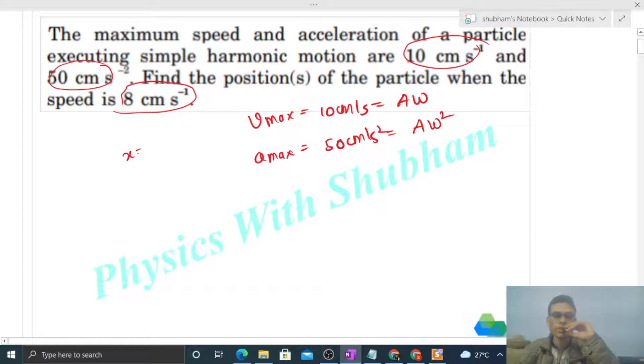Now we have to find out position, means x value. Find out where the speed is 8 centimeter per second. Speed, what will you write? Square root of A square minus x square into omega. So speed is given as 8.